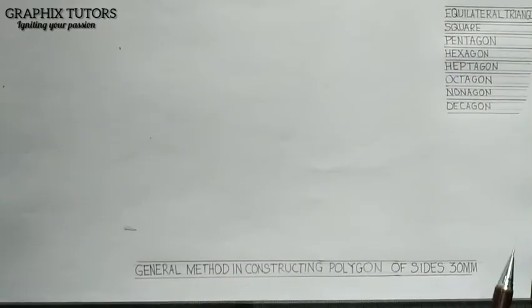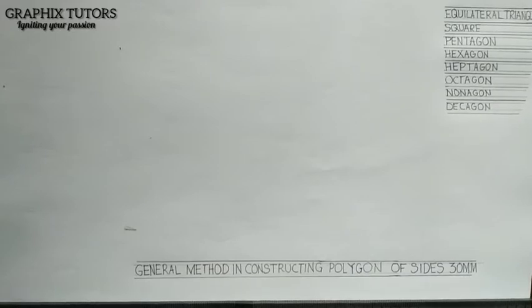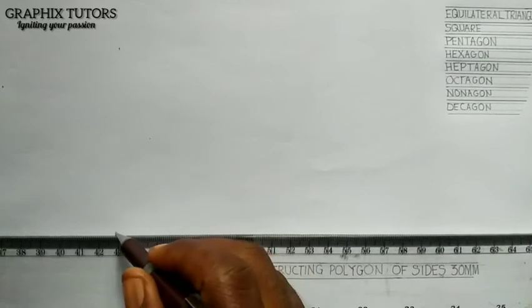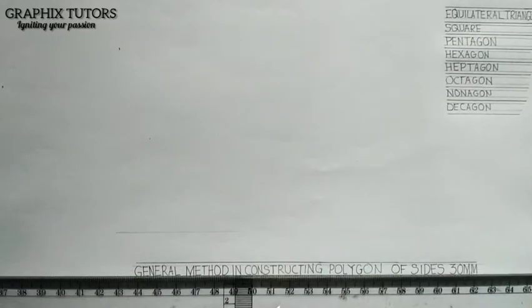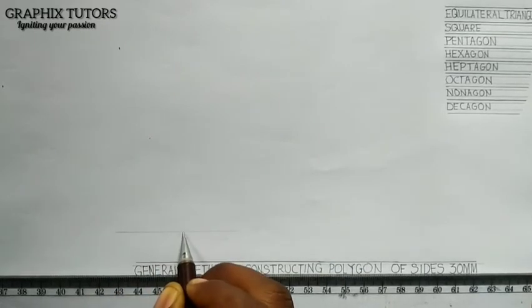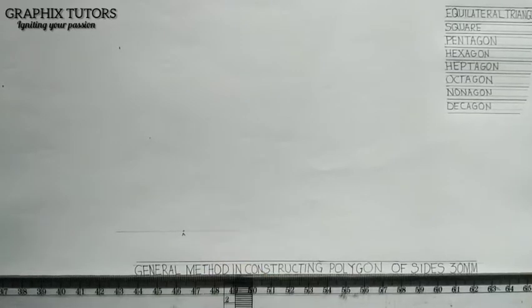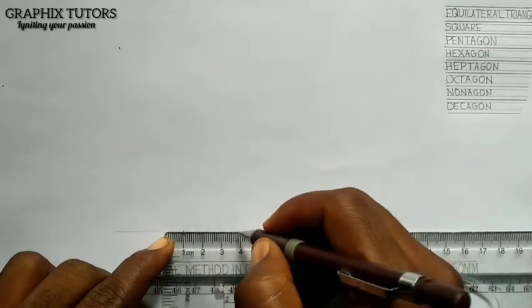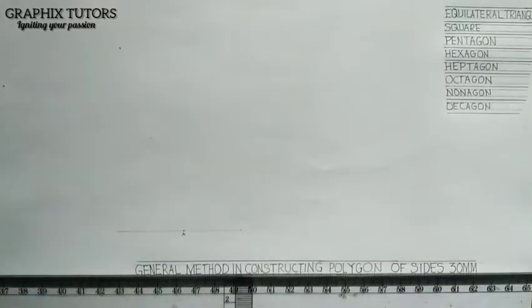I want to construct a polygon with sides of 30 mm. We are going to start with a square. I will draw a line and mark a point — this is point A. I will measure 30 mm using my meter rule and mark point B. So this is 30 mm here, and I am going to thicken it. That is point B.